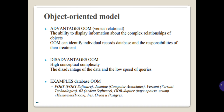Examples of Object-Oriented database systems include: POET (POET Software), Jasmine (Computer Associates), Versant (Versant Technologies), O2 (O2 Technology), Ardent Software, ODB-Jupiter, Knowledge Project, Intellect Plus, EURIS ORIEN, and Postgres.